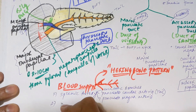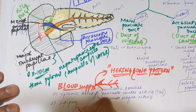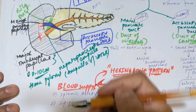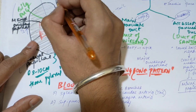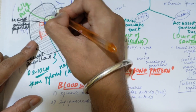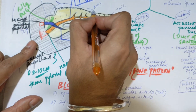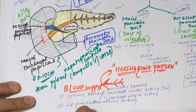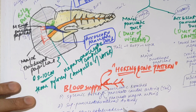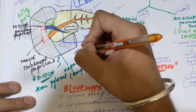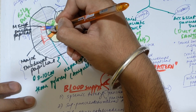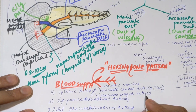The second artery is the superior pancreaticoduodenal artery, a branch of the gastroduodenal artery, which supplies the head region of the pancreas from above. The third is the inferior pancreaticoduodenal artery, branching from the superior mesenteric artery from below, supplying the middle head region. These two arteries anastomose and form an arcade in the head region of the pancreas.